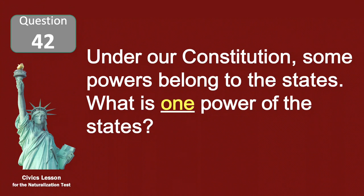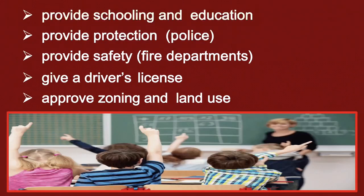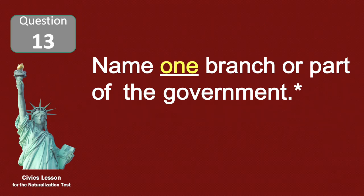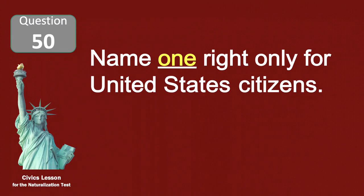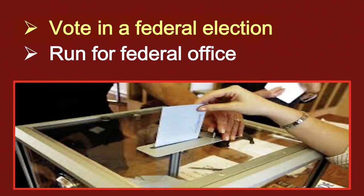Under our Constitution, some powers belong to the States. What is one power of the States? Provide schooling and education. Name one branch or part of the government. Congress. Name one right only for United States citizens. Vote in a federal election.